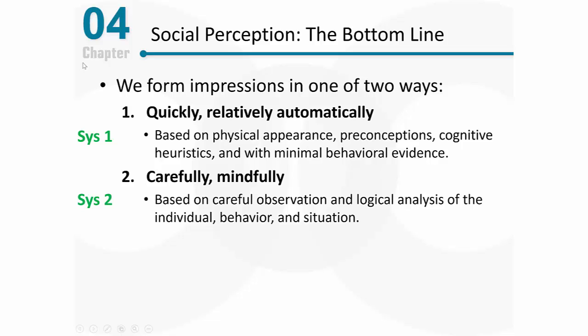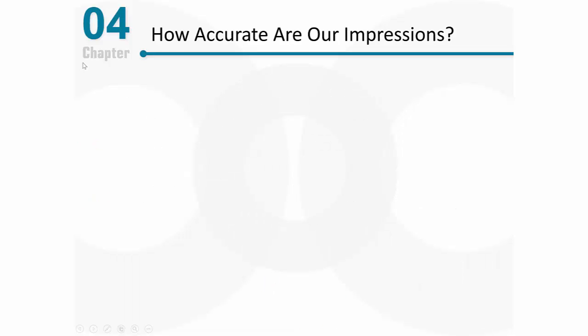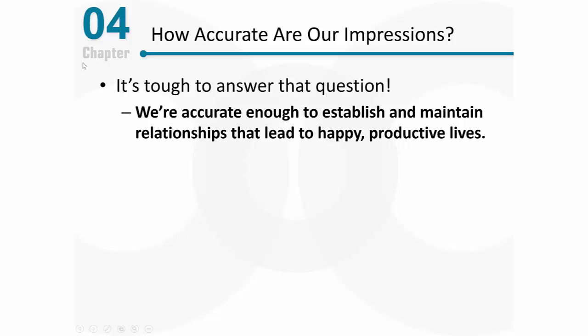We were referring to that distinction as system one and system two processing. This diagram right here shows the distinction between those processes relatively well. So how accurate are our impressions? It's kind of tough to answer specifically, but in general we're accurate enough to establish and maintain relationships that allow us to lead happy, productive lives.